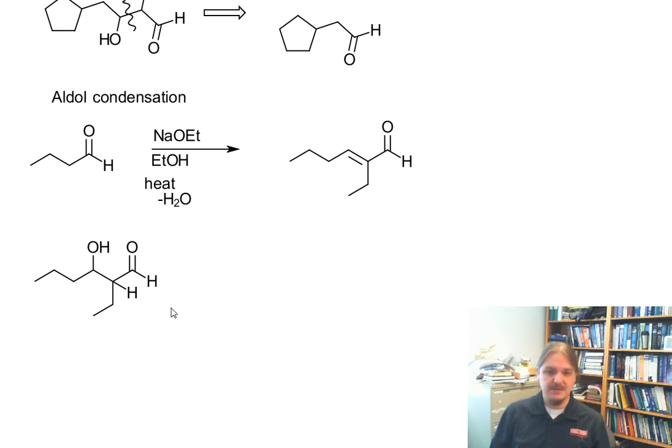We have this alpha hydrogen, which is slightly acidic. It can be deprotonated. And then that generates an enolate anion.